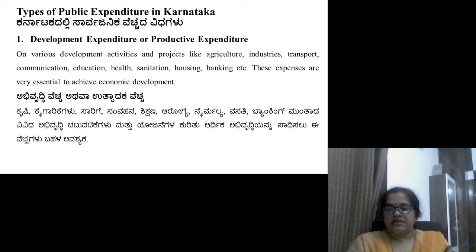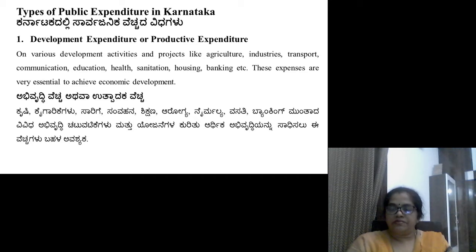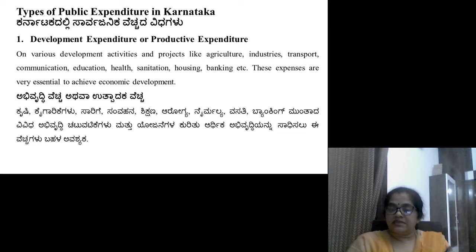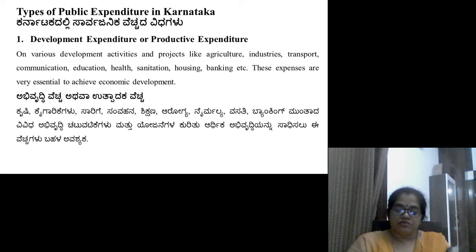The expenditure that brings about development in the economy is called developmental expenditure. For example, agriculture, industries, transport and communication, education, health, sanitation, housing, and banking — these are the expenses which are very essential to achieve the economic development. These are the types of public expenditure of Karnataka government.